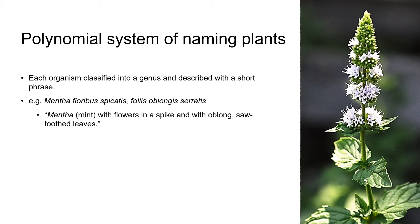Let's look at an example of a polynomial plant name. On the right you can see a photo of spearmint. Spearmint was placed in the genus Mentha, and then described in Latin as floribus spicatis foliis oblongis serratis. What this translates as is Mentha, or mint, with flowers arranged in a spike, and with oblong, saw-toothed leaves. While that's accurate, it's quite a mouthful and a really cumbersome system of nomenclature. Imagine writing that for all of the plants that were known at that time.